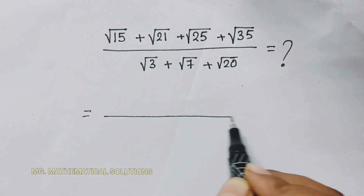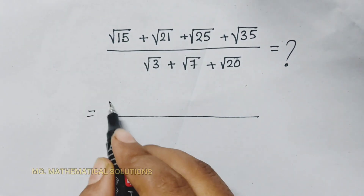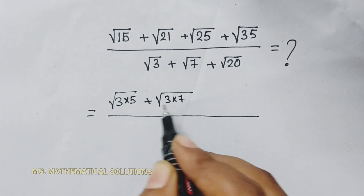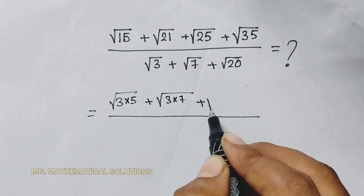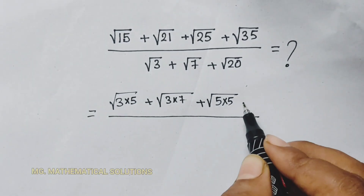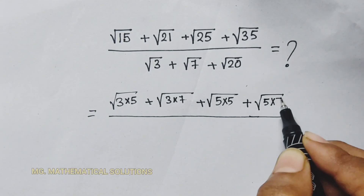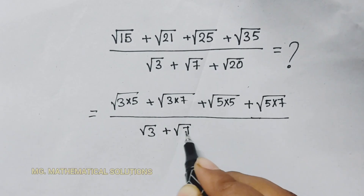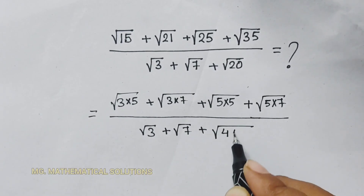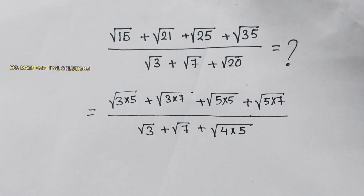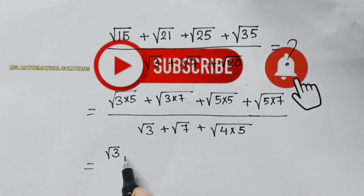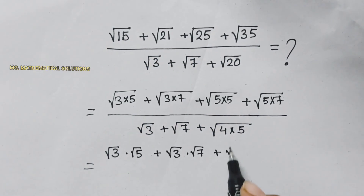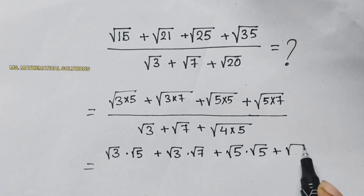We can write 15 as 3 into 5, plus 3 times 7 which is 21, plus 5 times 5 which is 25, plus 5 times 7 which is 35, all divided by root 3 plus root 7 plus root of 4 times 5 which is 20. So we can write this as root 3 times root 5, plus root 3 times root 7, plus root 5 times root 5, plus root 5 times root 7.